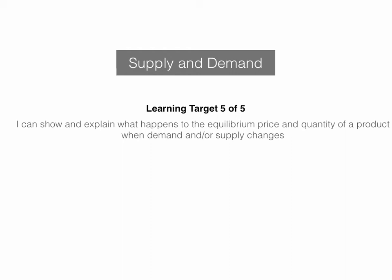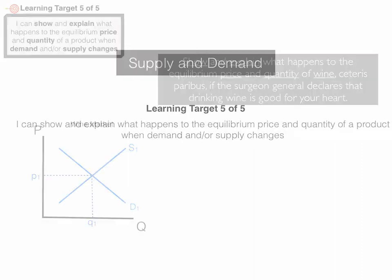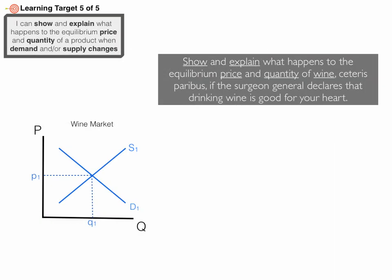Last lesson on supply and demand, learning target 505. I can show and explain what happens to the equilibrium price and quantity of a product when demand and/or supply changes. This is our essential learning target and it gets into why the prices of goods change.